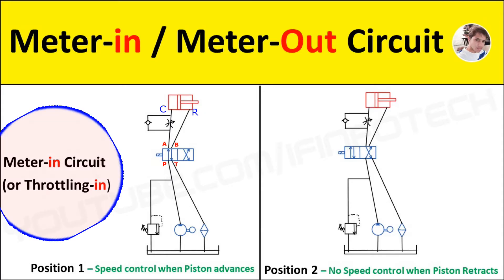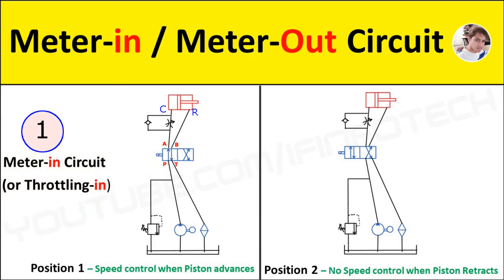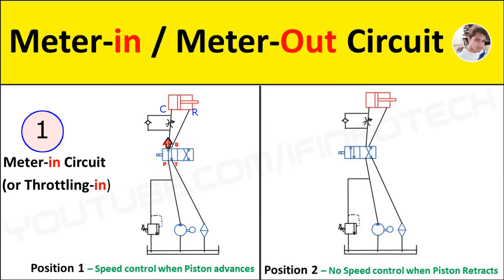First, we see the meter-in circuit for a double acting cylinder. In meter-in circuits, the rate of flow of oil going into the cylinder is controlled by a flow control valve. The flow control valve is placed at the inlet of the cylinder. The cap-end port C is the inlet for extension, and the rod-end port R is the inlet for retraction. In the first position of the 4/2 direction control valve, oil under pressure flows from port P to port A, and port B to port T. The flow is controlled.